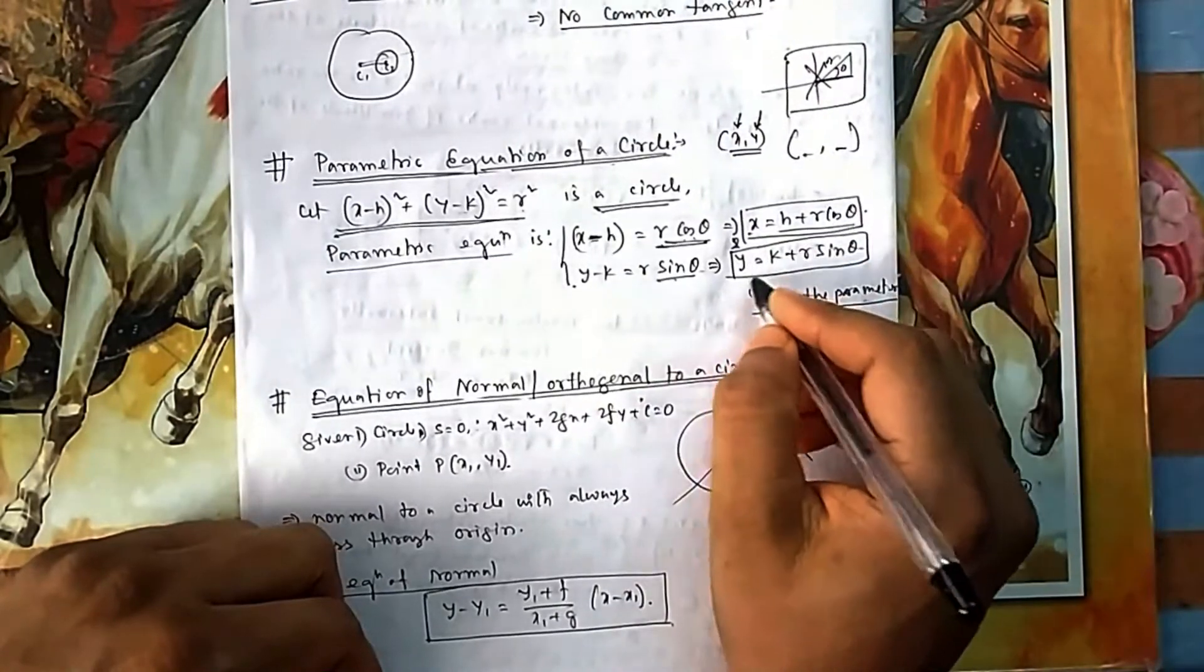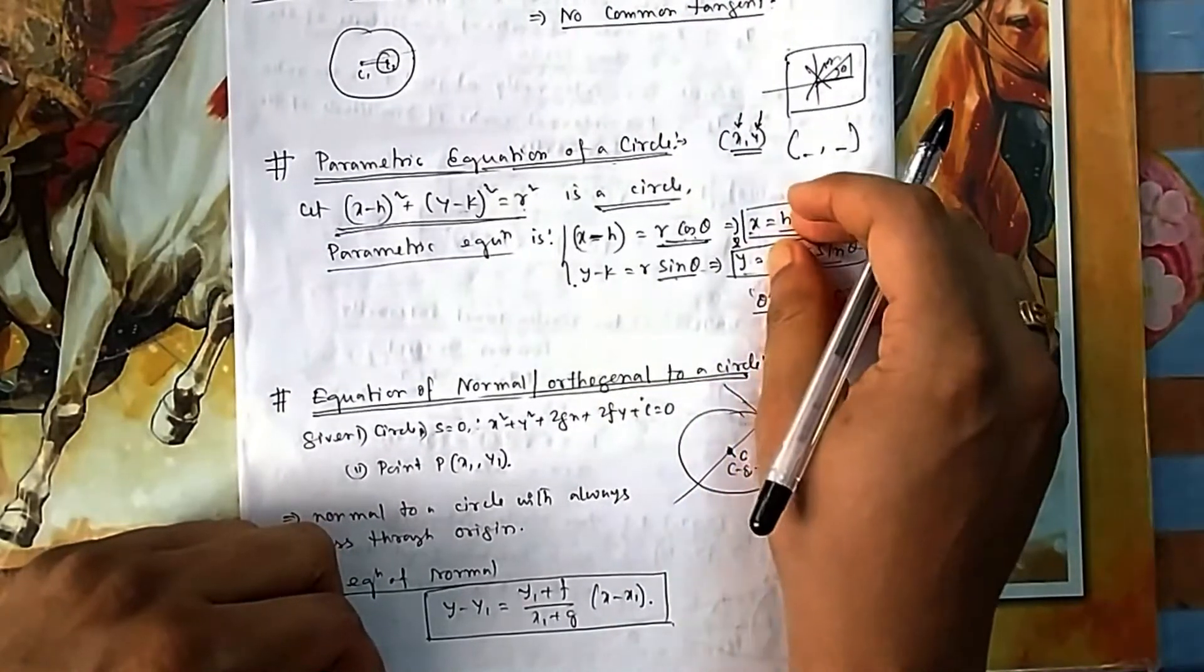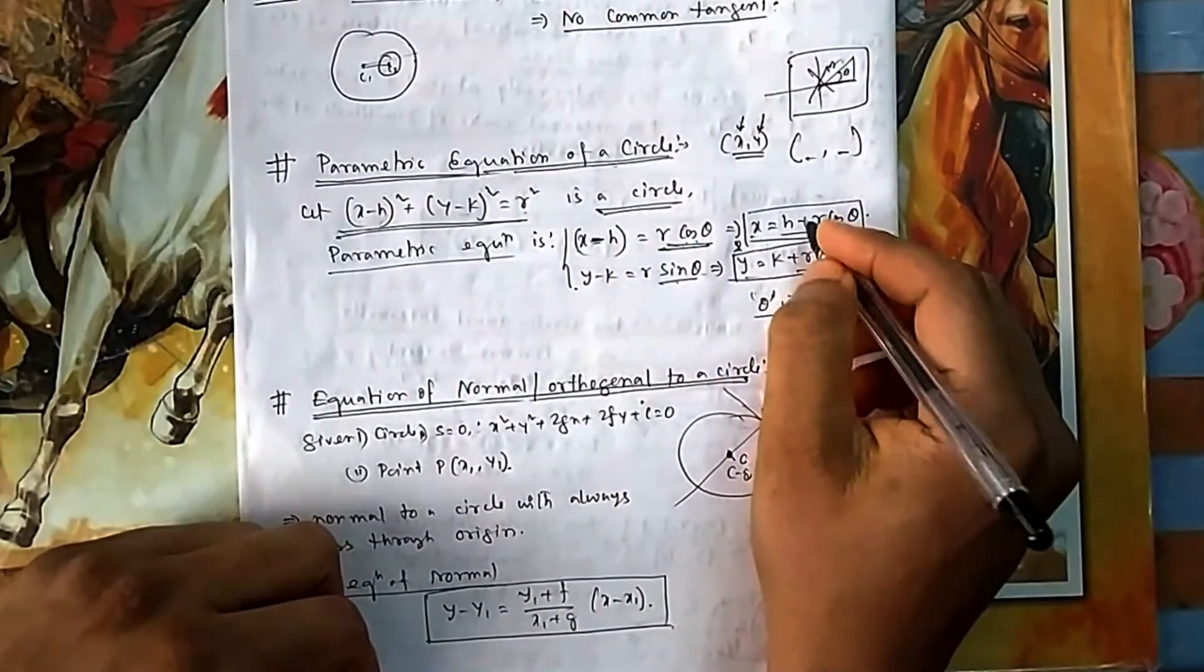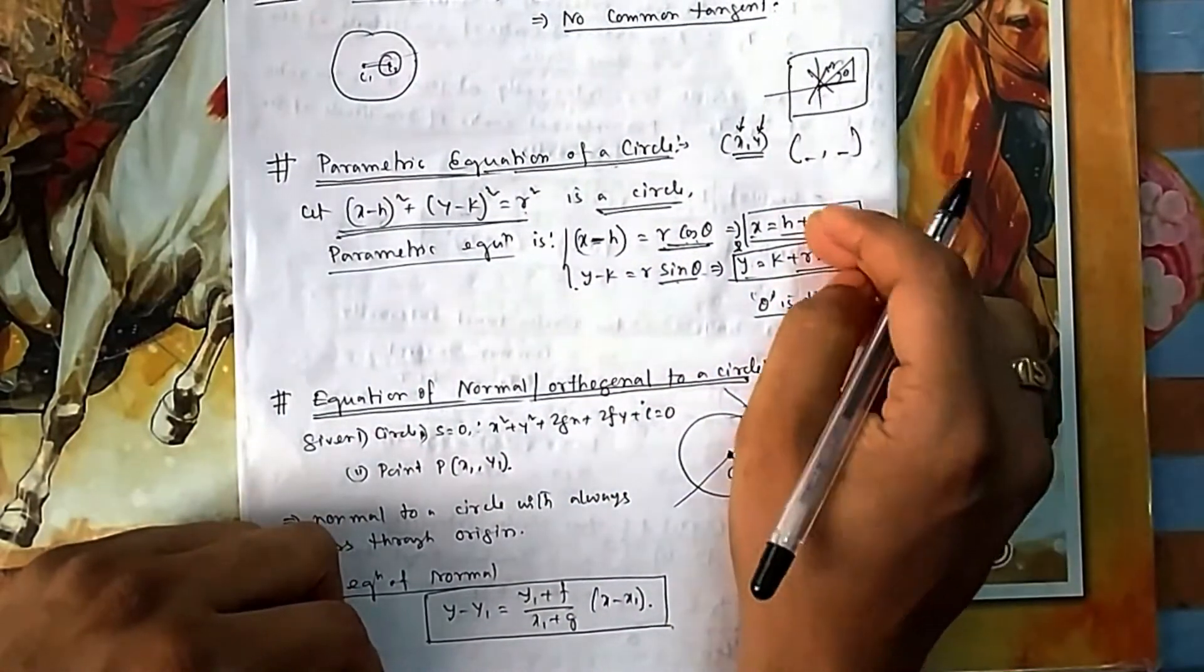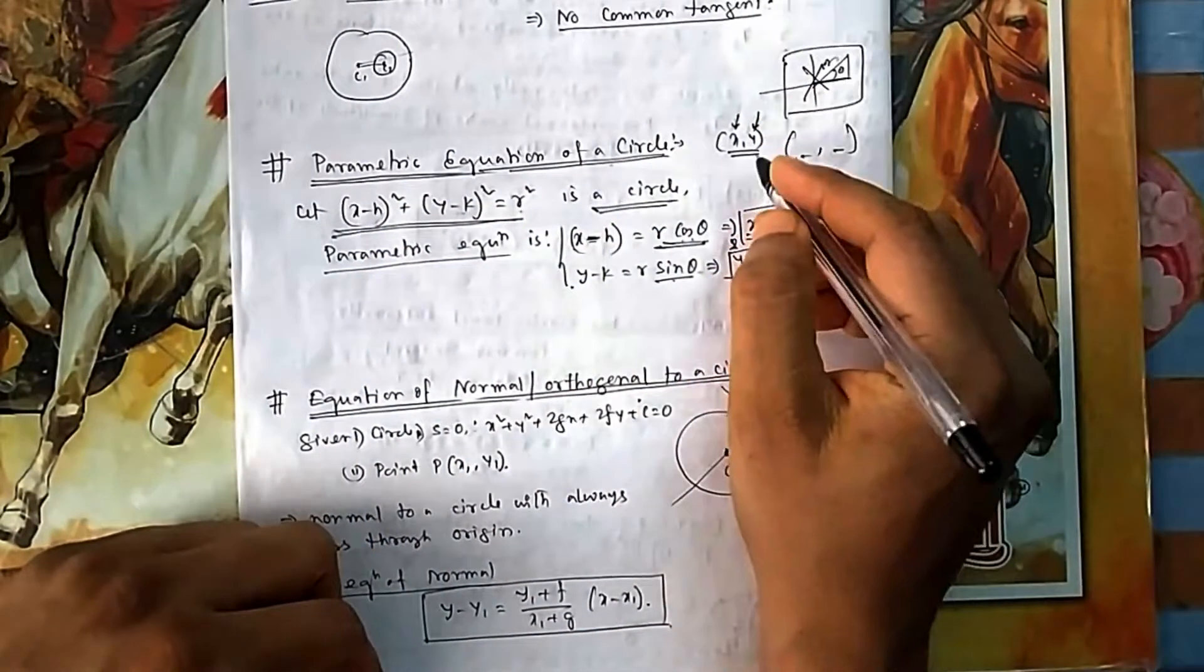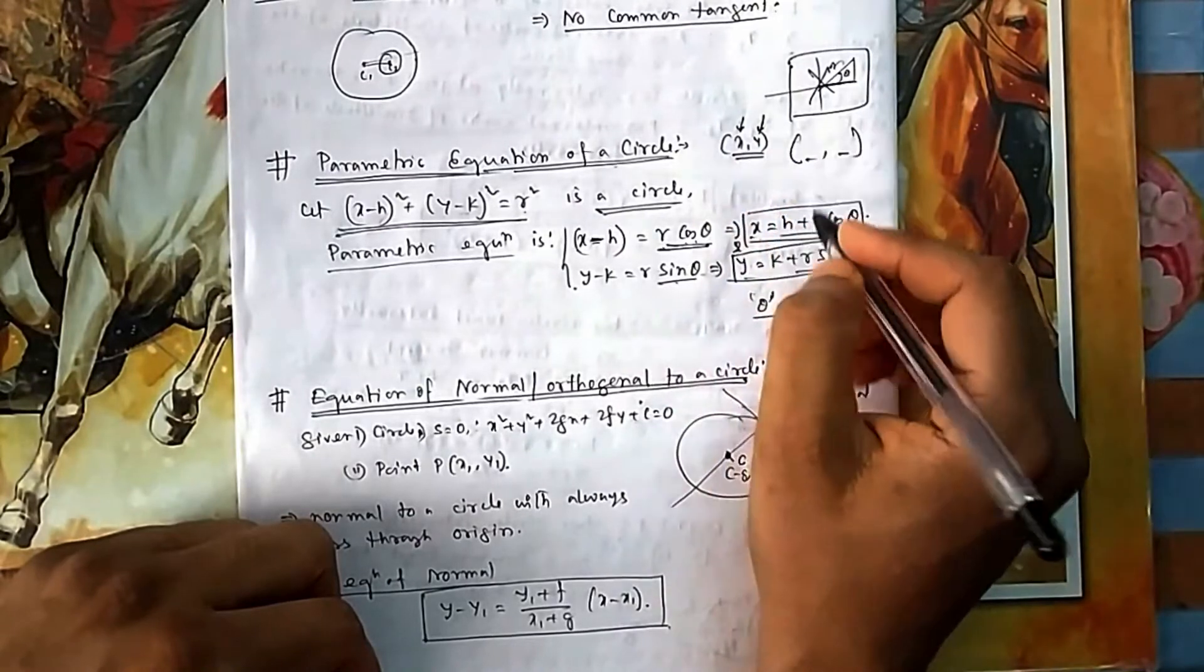So x is equal to this and y is equal to this. These two together make the parametric equation—parametric equations, not a single equation, both together. Now if you eliminate θ from these two, you will get this expression.